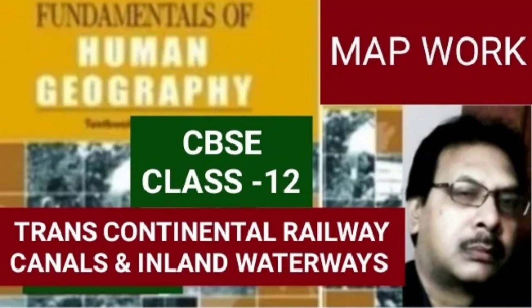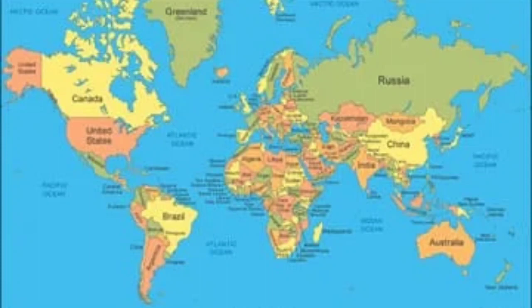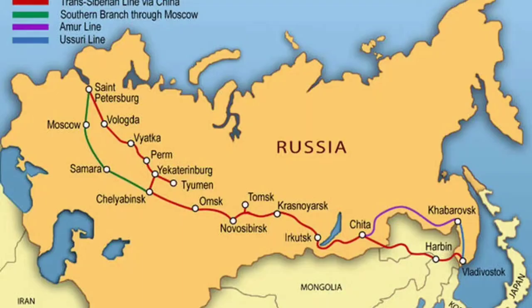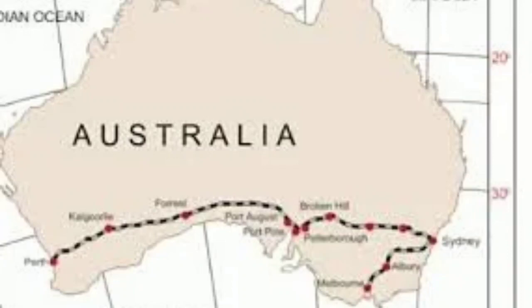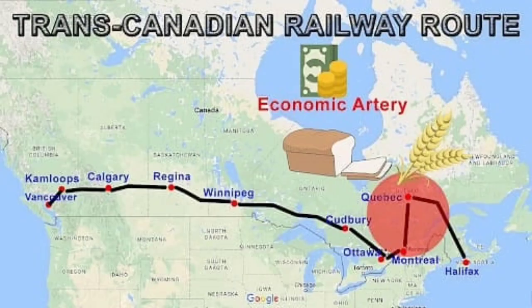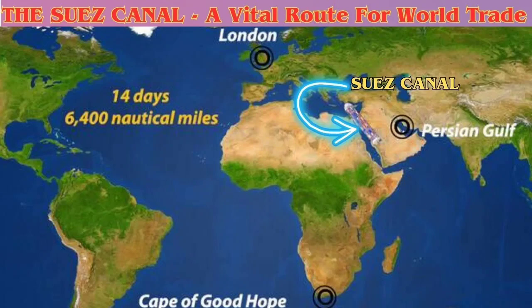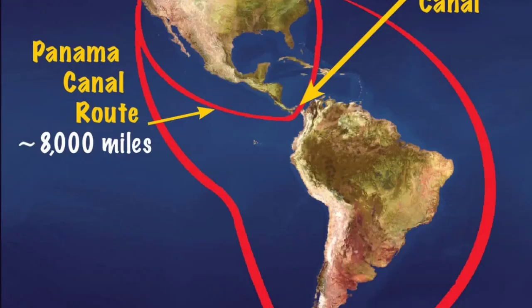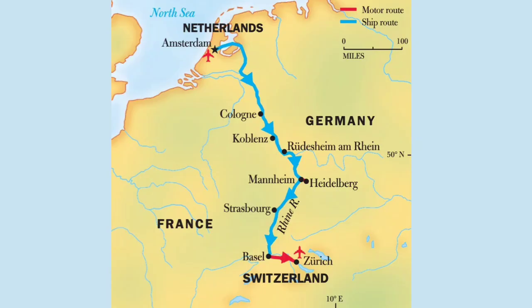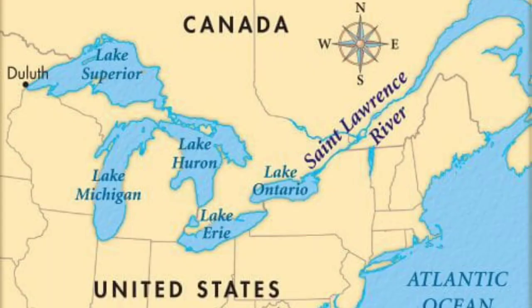In the mapping section for the board examination of class 12 in geography, from chapter 7 Transport and Communication and chapter 8 International Trade of the Fundamentals of Human Geography, information about terminal stations of transcontinental railways — like the Trans-Siberian, Trans-Australian, and Trans-Canadian railways — is important. In the section of inland waterways, information about the Suez Canal, Panama Canal, Rhine River waterway, and Saint Lawrence Seaway is also important.